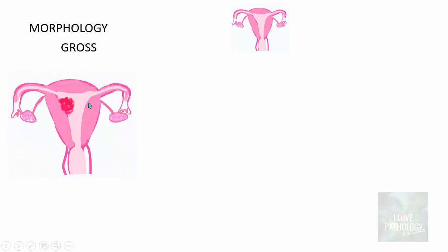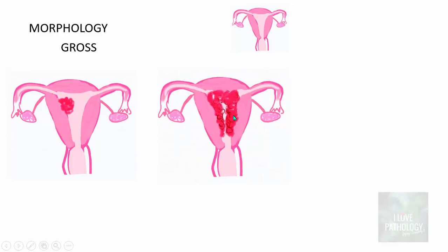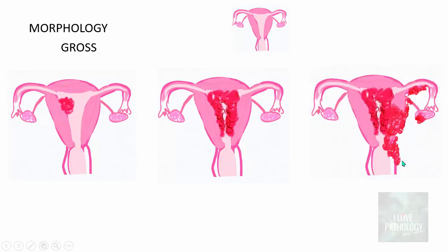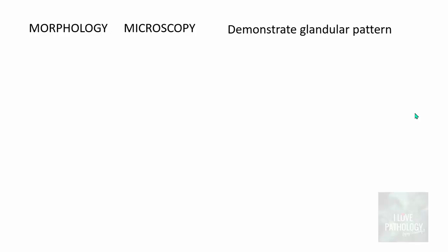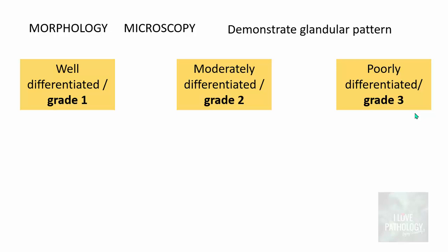Morphologically, grossly, the endometrioid type of endometrial carcinoma can be localized as a small polypoid mass, or it can diffusely involve the entire lining of the endometrium. It can invade into the myometrium, cervix, parametrium, fallopian tubes, and ovaries, and then metastasize to distant places. Microscopically, endometrioid tumors demonstrate a glandular pattern and are classified as well differentiated, moderately differentiated, and poorly differentiated — also referred to as grade 1, grade 2, and grade 3 tumors.